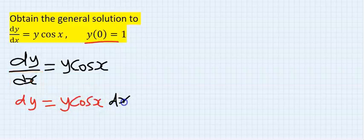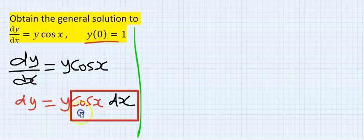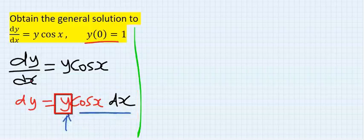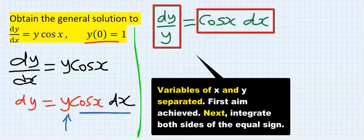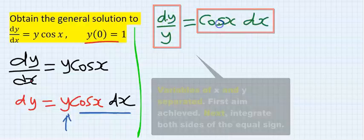I'm going to have this because this is a function of x. I will leave this, but y needs to move so that I can separate the variable. Now the variables are separated: the y and y cos x and the x.